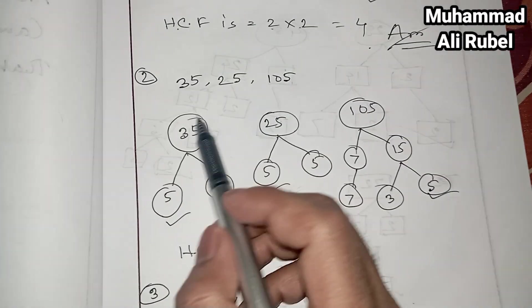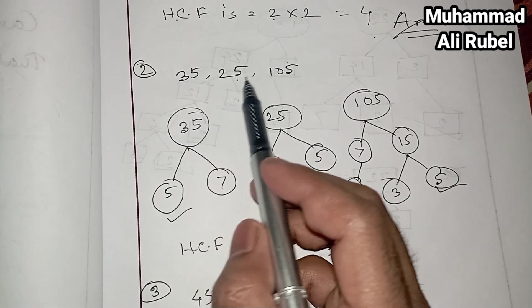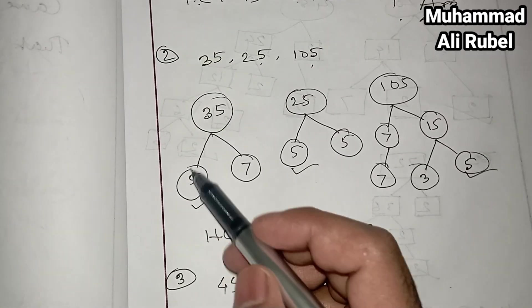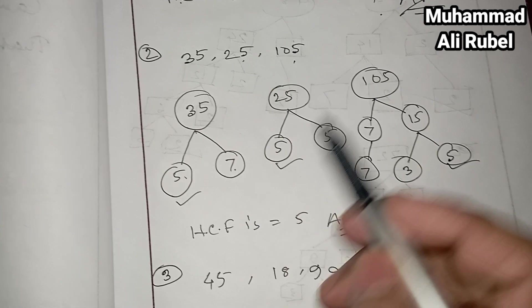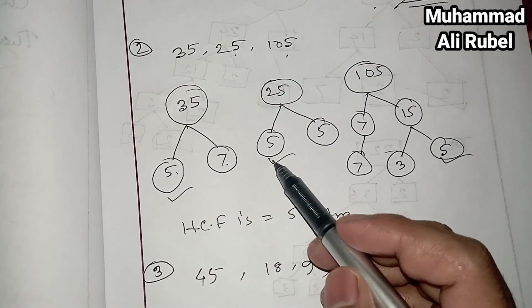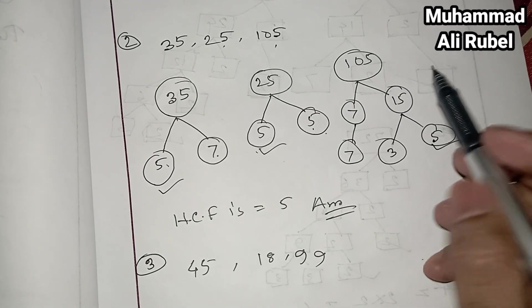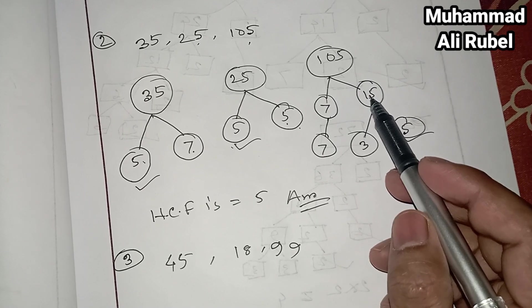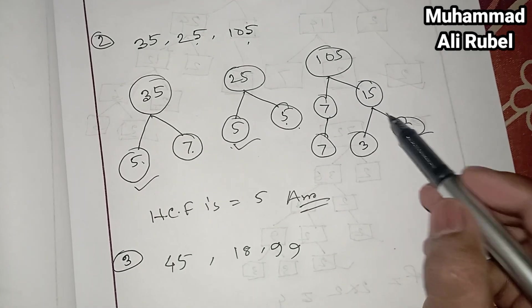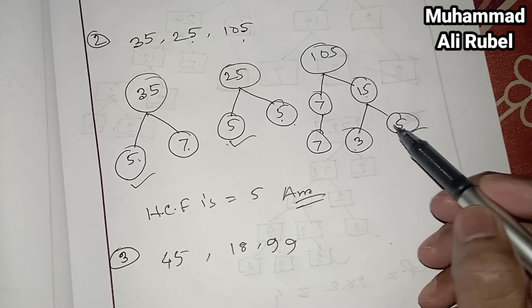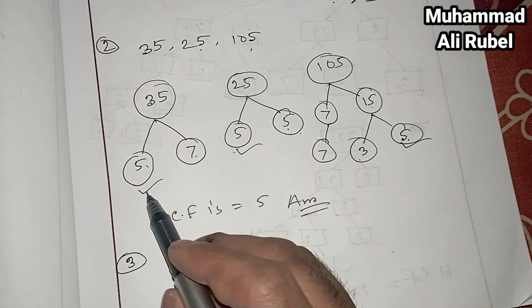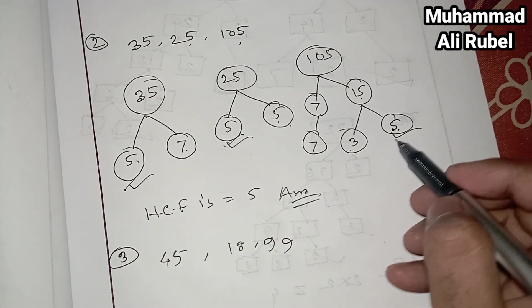Now look at number 2: 35, 25, and 105. For 35: 5 times 7. For 25: 5 times 5. For 105: 3 times 5 times 7. So we find out the common numbers — only 5, 5, and 5 are common.